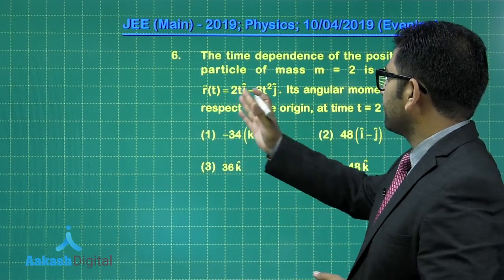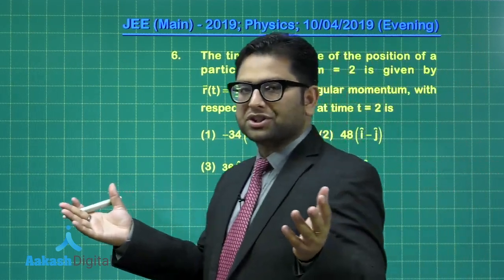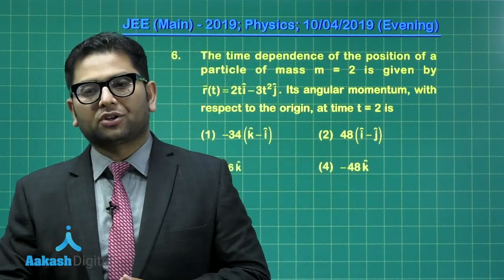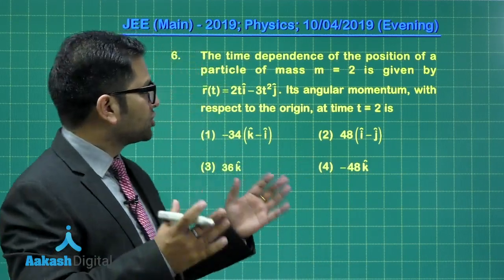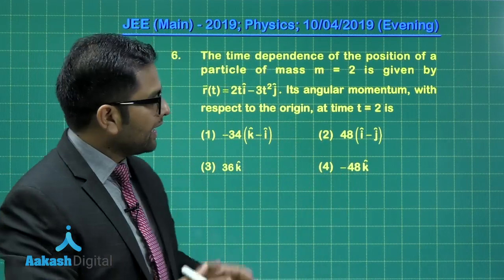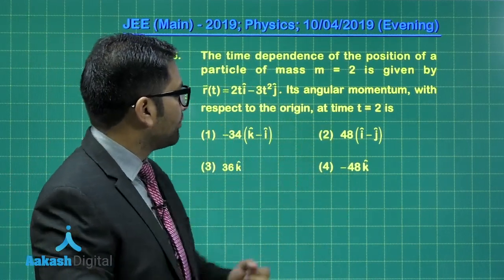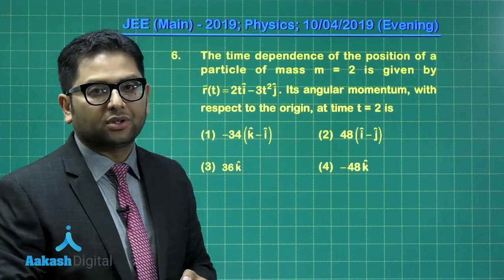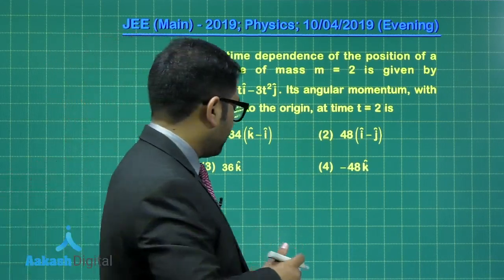You see the parameter is very clearly given. Mass is two, the position vector of the particle, of course when we say the position vector that's with respect to origin. The position vector is a function of time, that means it's moving. We need to calculate the angular momentum with respect to the origin.